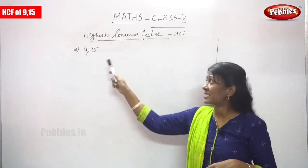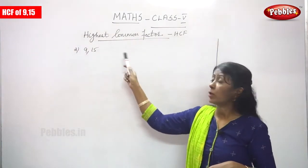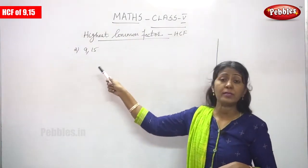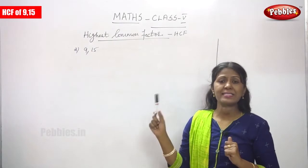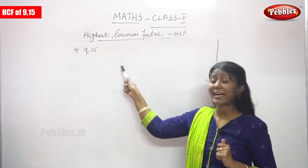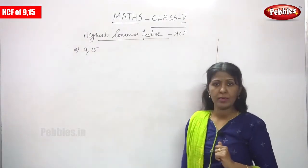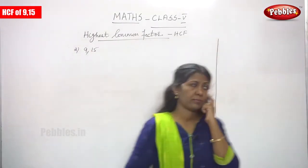Let's do the other sum, that is 9 and 15. You have to find out the highest common factor, that is HCF, of 9 and 15. Let's do the sum.